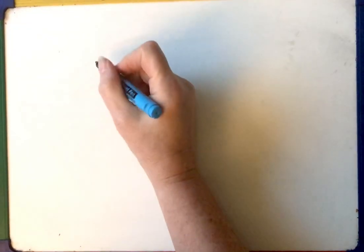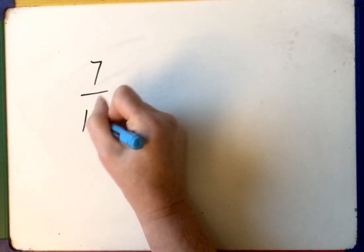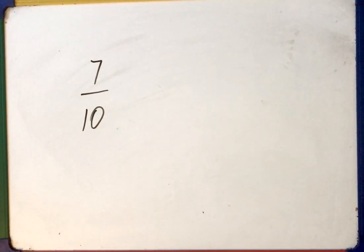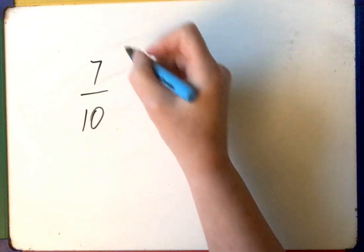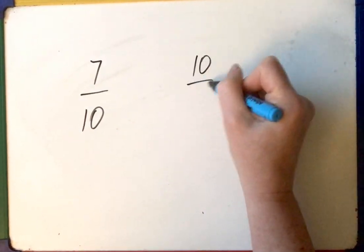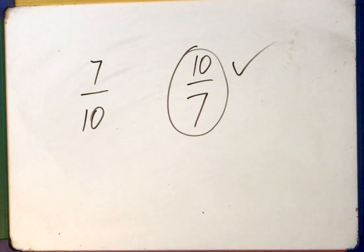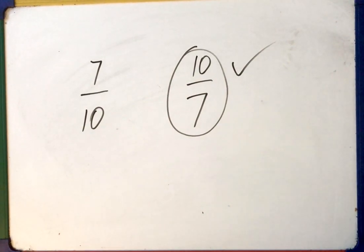Here's just a quick one — do it in your head before I write down the answer. The fraction 7 tenths: what's the reciprocal? The reciprocal is 10 over seven. Hopefully you said that, or saw that, or wrote it down.